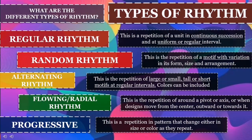Now, let's find out what are the different types of rhythm. We have regular rhythm, random rhythm, alternating rhythm, flowing or radial rhythm, and progressive rhythm.